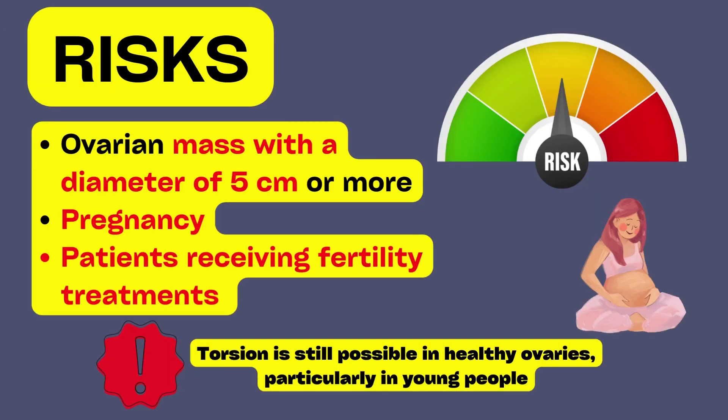Let us discuss the risks. An ovarian mass with a diameter of 5 cm or more is the greatest risk factor for ovarian torsion. The ovary's likelihood of rotating on the axis of the two ligaments keeping it in suspension is increased by the bulk when there is a mass. The mass could be anything ranging from neoplasms and cysts.